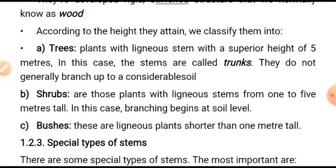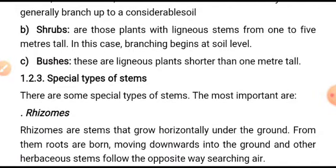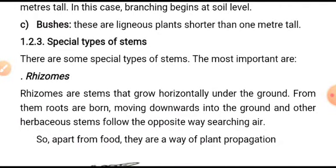Trees are real trees like those in forests. Shrubs are plants with a ligneous stem from one to five meters tall; in this case branching begins at the soil level, requiring branches since growth starts from the soil.